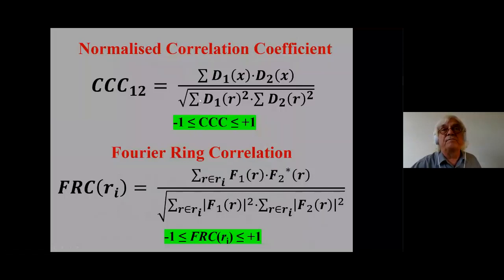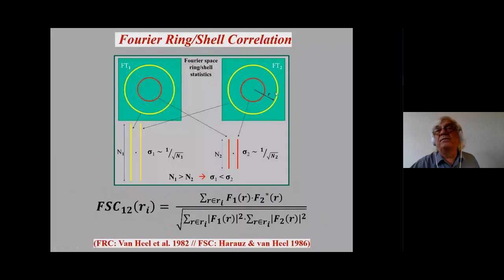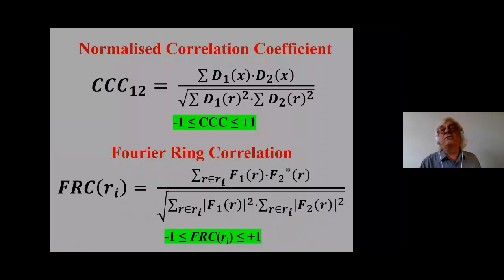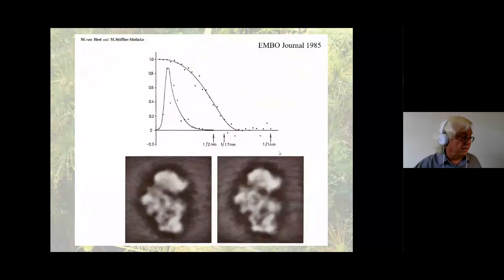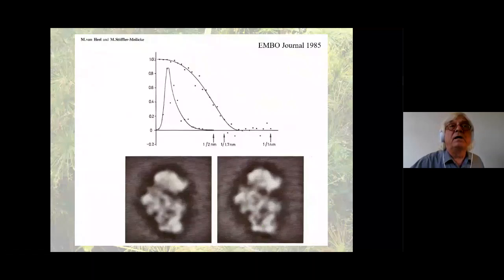Here you see where this came from — model calculations showing the principles, no real data. This is actually an old ribosome paper we published 35 years ago, comparing structures from E. coli. You see that the Fourier ring correlation behaves in a certain way — the power drops much faster because of low-frequency components — but this really helped us understand how to see these structures. Here again is the three-dimensional version: the Fourier shell correlation. You have two structures done independently — each is just the other half of the dataset — and instead of a ring, this becomes a shell in Fourier space.